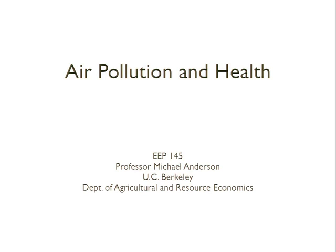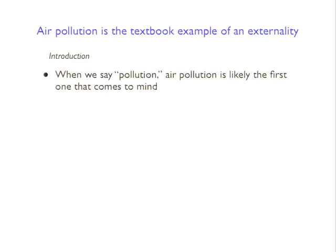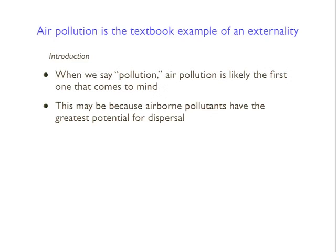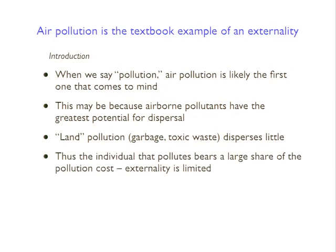So, air pollution and health. I think air pollution is the textbook example of an externality. When we say pollution, air pollution is really what comes to mind. This might be because airborne pollutants have the greatest potential for dispersal. If you think about other types of pollution — land pollution would be garbage or toxic waste sites, superfund sites — the dispersion is pretty limited. If you were living a couple of miles away from a food factory, you can still imagine receiving a lot of pollution from that.